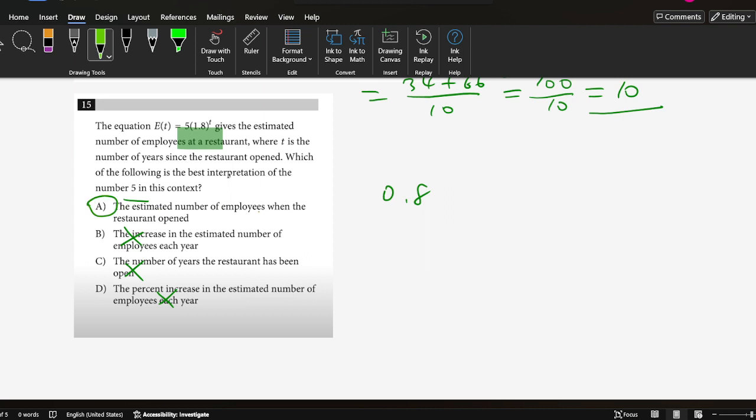That should be this. Assuming the number of employees when the restaurant opened. So 5 is the beginning number when it opened.